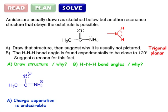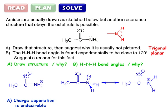To solve part B, we need to examine the geometry around nitrogen in both resonance structures. In the structure on the left, the nitrogen atom forms 3 bonds and has 1 lone pair, so the geometry is trigonal planar and the HNH angle is about 120 degrees.